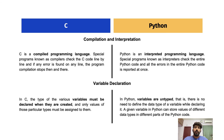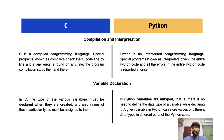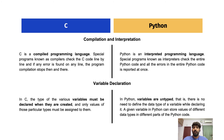Looking at compilation versus interpretation: C is a compiled language while Python is an interpreted language. Compilers check the C code line by line, and if any error is found the compilation stops immediately at that line. In Python, interpreters check the entire code and report all errors at once. In C, errors are reported as soon as they appear; in Python, because the entire program is checked first, it takes more time to report errors back.